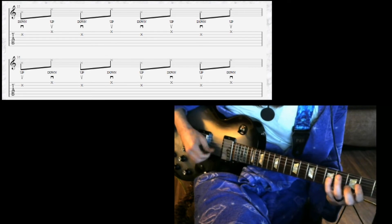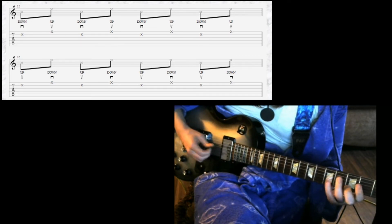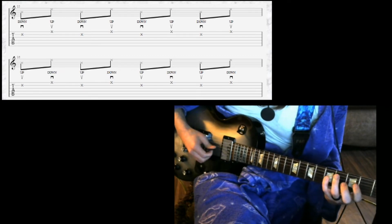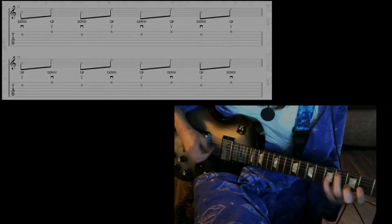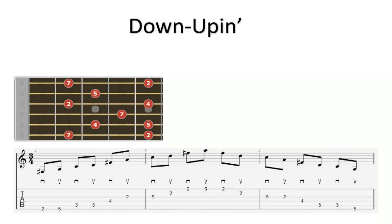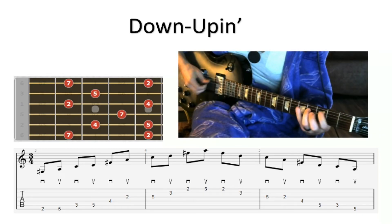If this exercise is too difficult at first, you can simply isolate the string changes. I call these the inside and outside strums considering the pick either stays inside the 2 strings or outside of them. Once these fundamentals are solid, you can practice playing the entire arpeggio using consistent up and down strums.